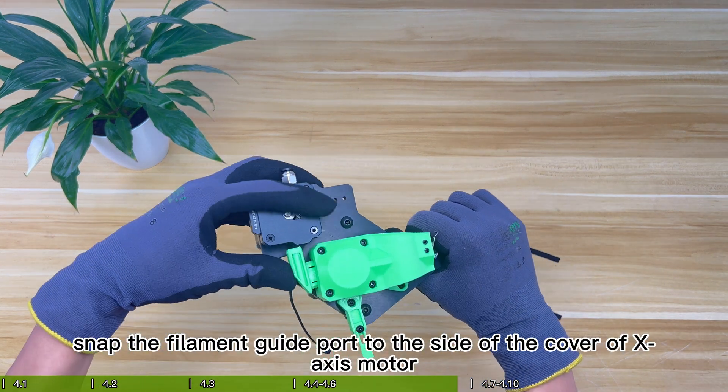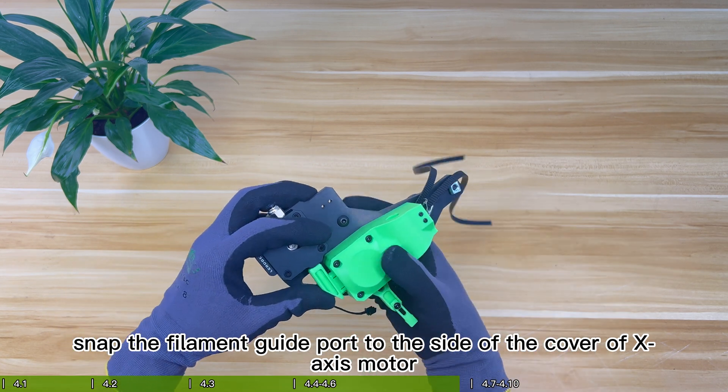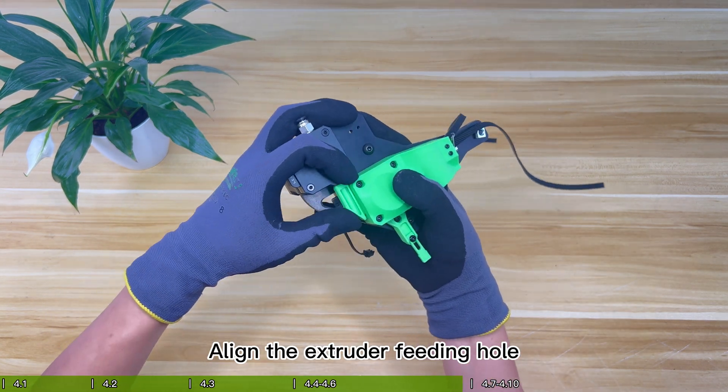Finally, snap the filament guide port to the side of the cover of X-axis motor. Align the extruder feeding hole.